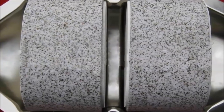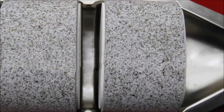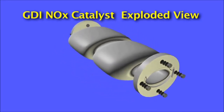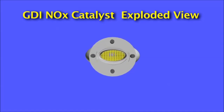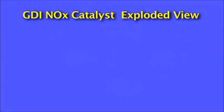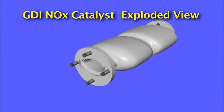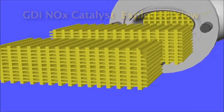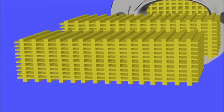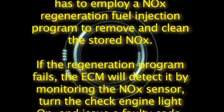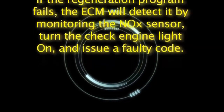GDI NOx Catalyst Regeneration: The GDI NOx storage catalyst is in charge of removing, storing, and then reducing the output of nitrogen oxides, also called NOx. GDI engines, due to their higher compression ratios, do produce a higher amount of NOx. It is for this reason that after a specific period of time, the NOx catalyst becomes saturated and can no longer absorb any NOx. The ECM looks at the NOx sensor to determine the efficiency of it, and has to employ a NOx regeneration fuel injection program to remove and clean the stored NOx. If the regeneration program fails, the ECM will detect it by monitoring the NOx sensor, turn the check engine light on, and issue a faulty code.